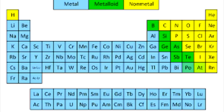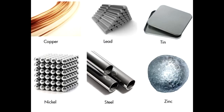Let's look at the transition elements in the class. Examples of metals include copper, lead, tin, nickel, steel, zinc, etc.